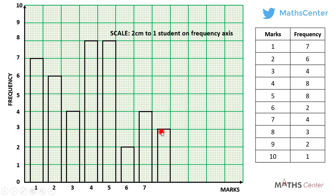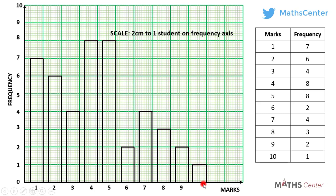For mark eight, the height of the bar is at three. Mark nine has a frequency of two so the height will be at two. The last one is mark ten with a frequency of one. We leave three small boxes and the bar occupies seven small boxes, with the height at one. That is for mark ten.